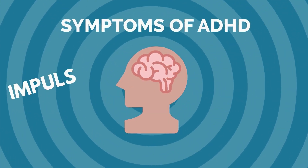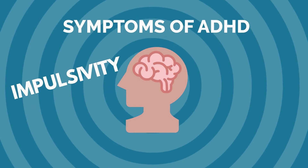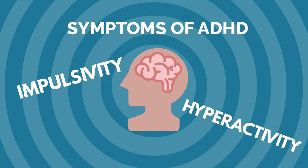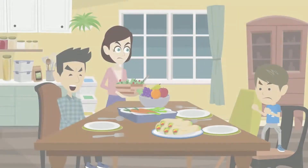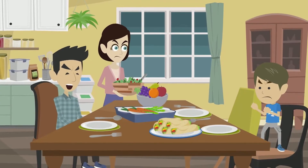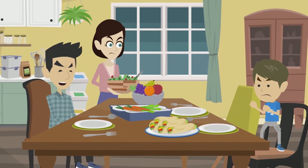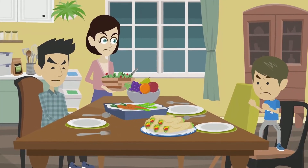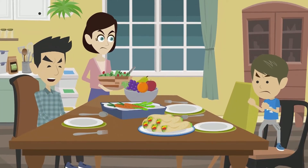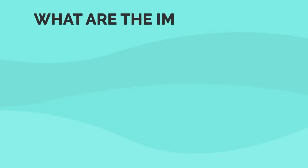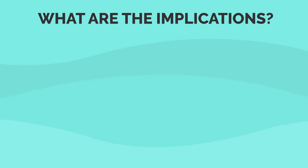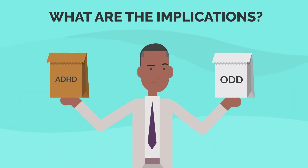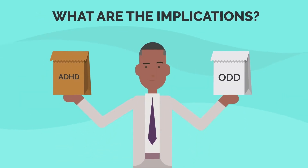This is because the symptoms of ADHD, such as impulsivity and hyperactivity, can make it difficult for children to regulate their behavior and emotions, which can lead to defiant behavior.